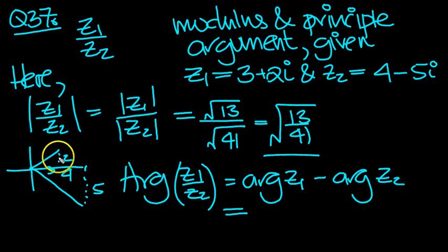The principal argument of z1, which is here, acute, is tan to the minus 1 of 2 thirds. So that's tan to the minus 1 of 2 over 3.